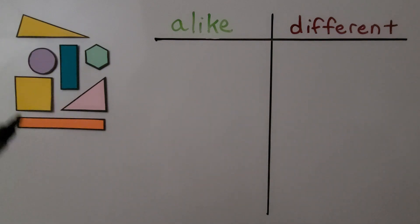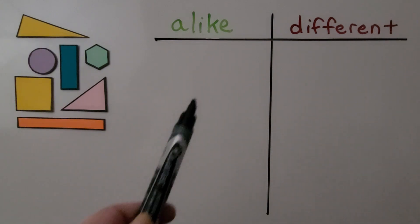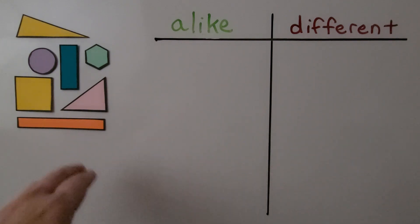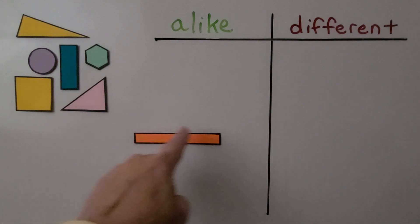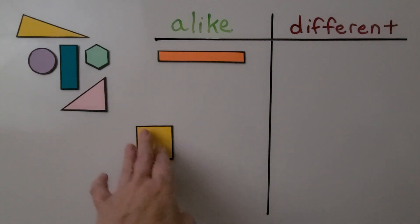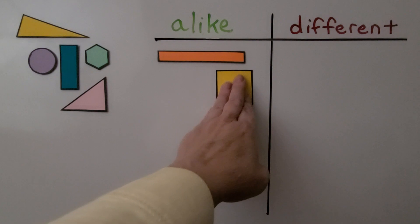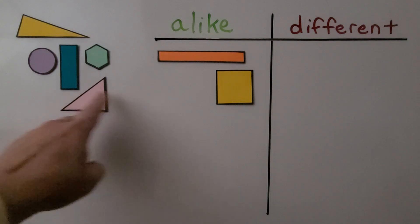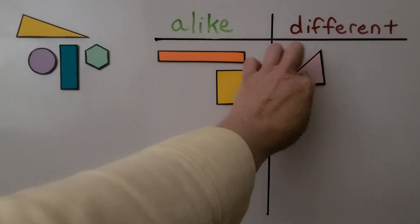Here we have some shapes, and we can sort them into sets that are alike and different by the number of their vertices. I'd like to choose four. So we can put all the shapes with four vertices in the 'alike' set. Here we have a rectangle — it has four vertices. Here we have a square — it also has four vertices. Here we have a triangle — it has three vertices, so that's not like these. This triangle would be different.